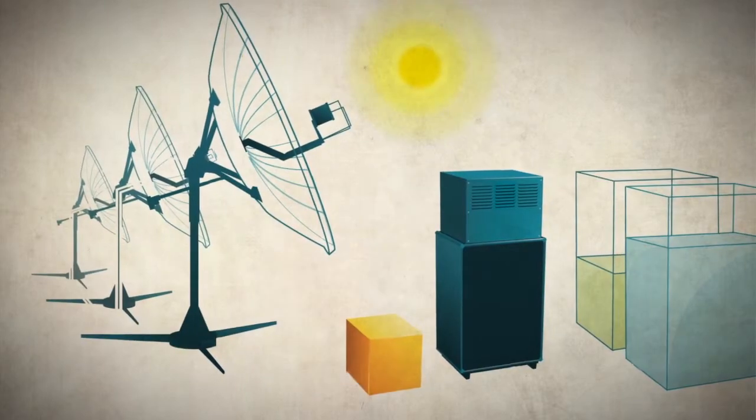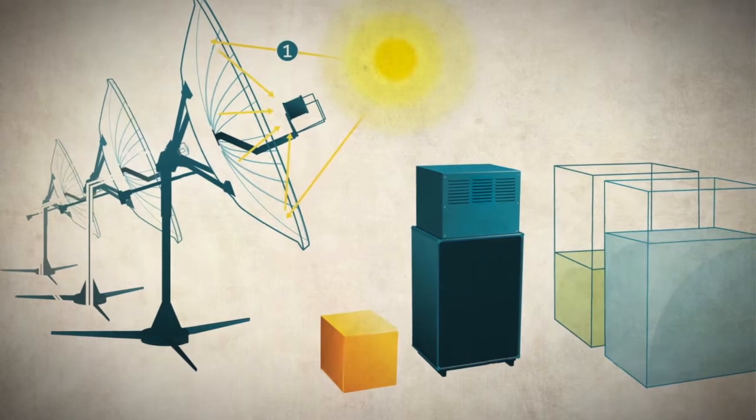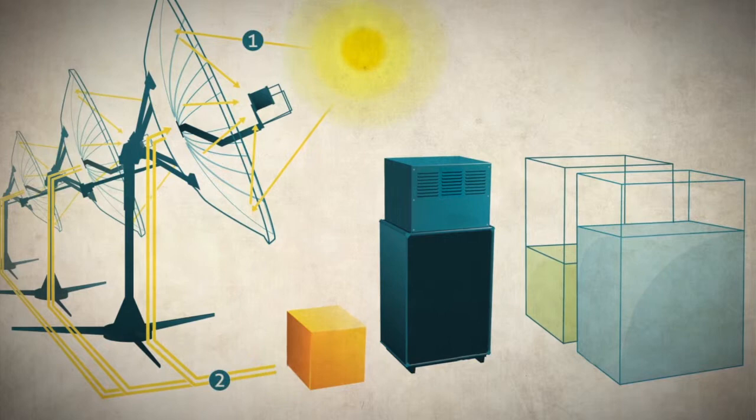Here's how it works. Our reflective parabolic dishes concentrate sunlight back to a focal point, where we achieve temperatures up to 4,000 degrees Fahrenheit.